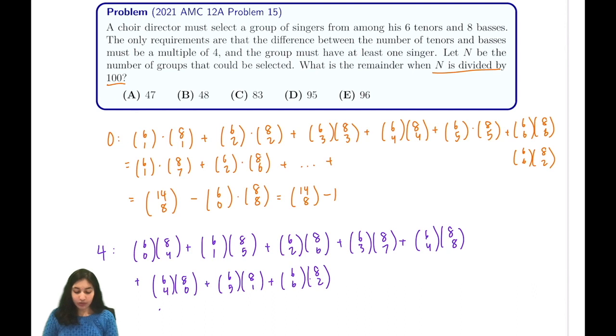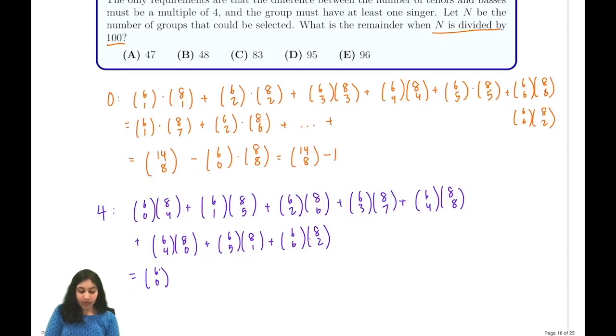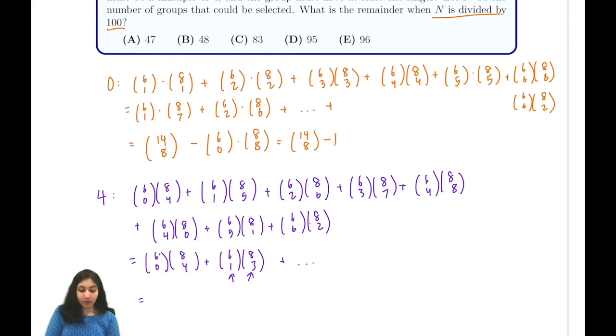In this problem, we can similarly rearrange our expression to be 6 choose 0 times 8 choose 4 plus 6 choose 1 times 8 choose 3, and so on. The sum of our two lower terms is always 4. And that tells us that this expression is equal to 14 choose 4 by Vandermonde's identity.